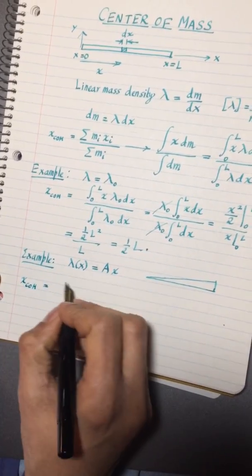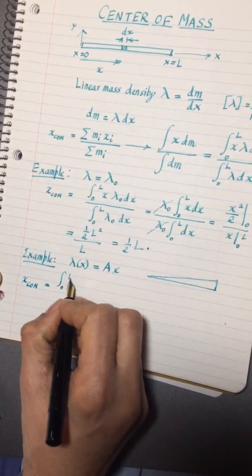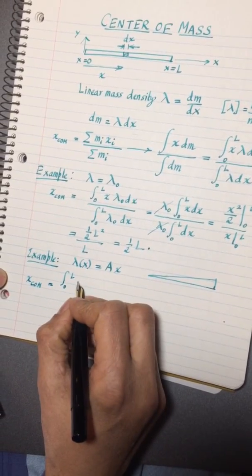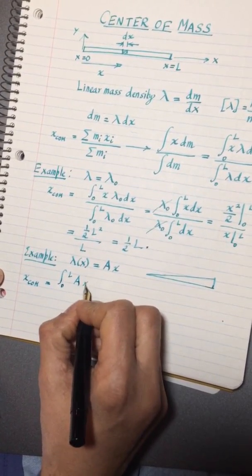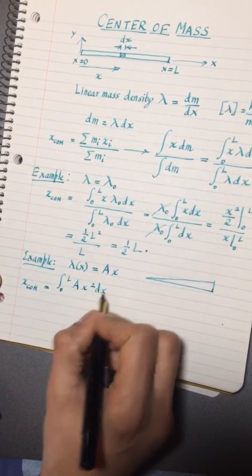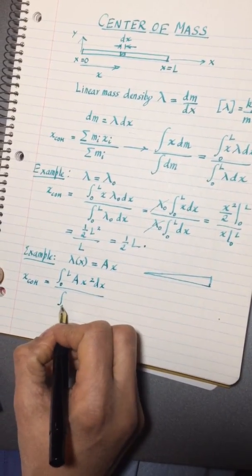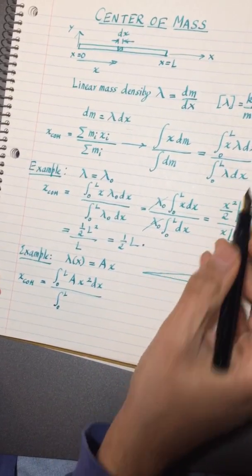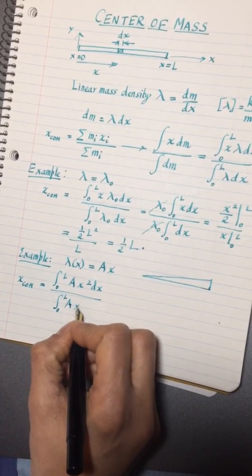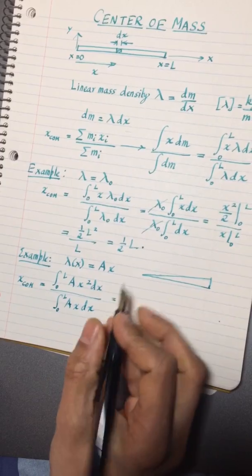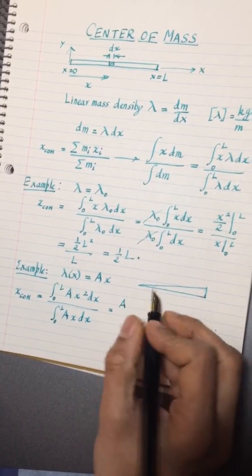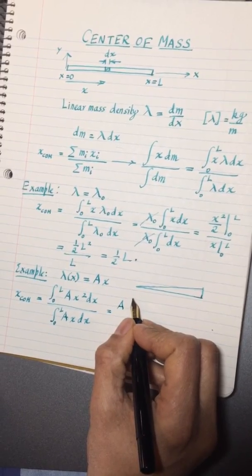Using the same definitions I get integral 0 to L and the lambda is replaced now by Ax. So I'm going to get x times Ax which is Ax squared dx, and the denominator I just have the integral from 0 to L. So that's now lambda of x dx which is just Ax dx.